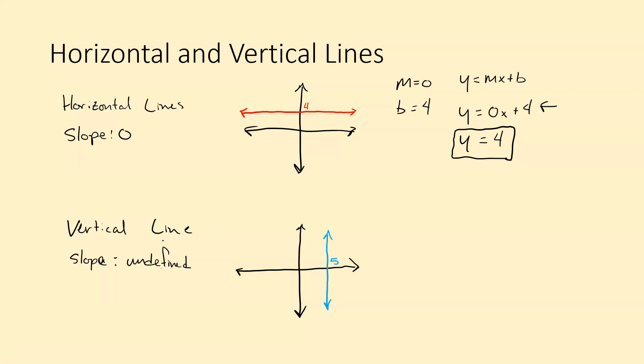And people a lot of times will get these mixed up. Horizontal line has a slope of 0. Vertical line has an undefined slope. So try to keep those straight in your mind.